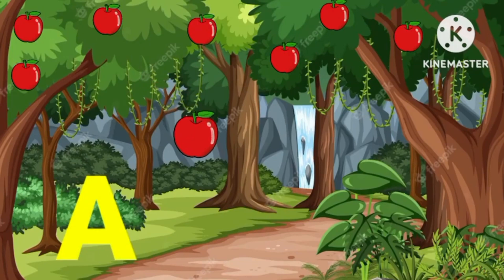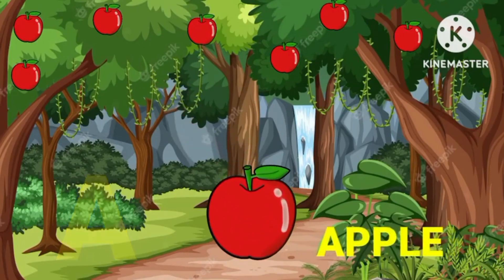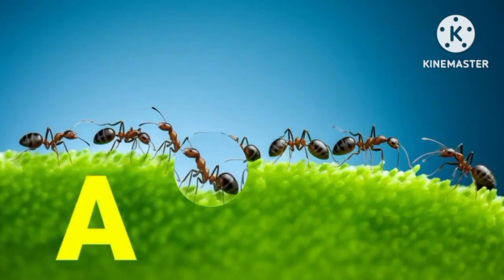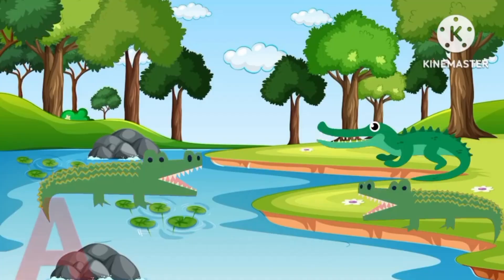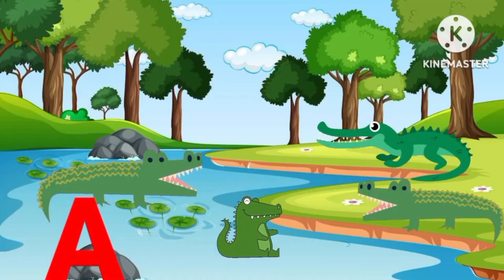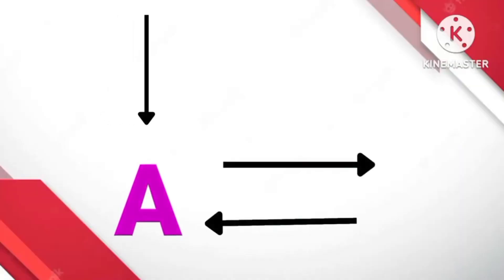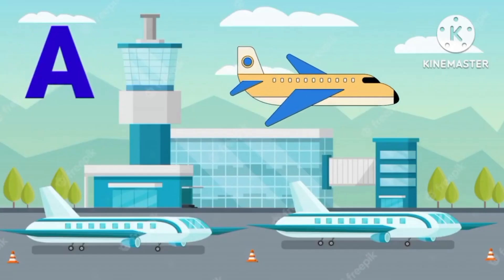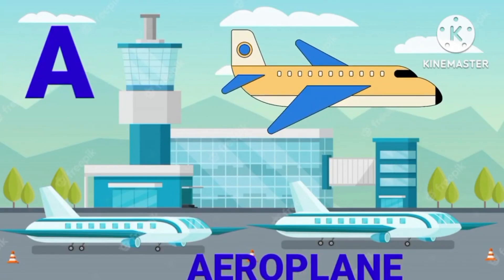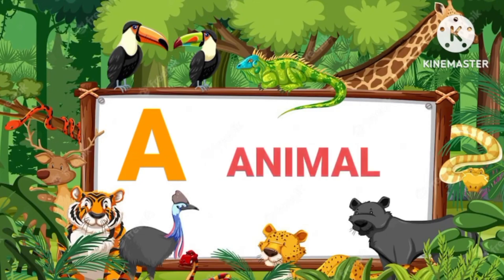A. A for apple. A for ant. A for alligator. A for arrow. A for airplane. A for animal.